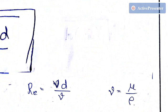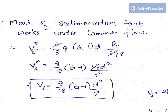Reynolds number is Re = Vs × d / ν, where ν is kinematic viscosity, and ν = μ/ρ, where μ is dynamic viscosity. SI units: diameter in meters, velocity in m/s, kinematic viscosity in m²/s, density in kg/m³, and dynamic viscosity in N·s/m². Most sedimentation tanks operate under laminar flow because the velocity is retarded, so we substitute Cd = 24/Re into the equation and simplify. The Vs terms cancel and we get: Vs = (g/18) × (G − 1) × d² / ν. This is Stokes' Law.